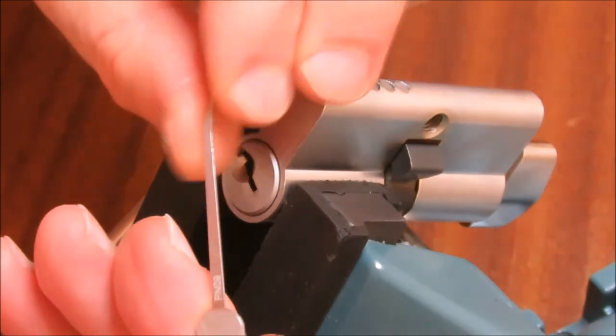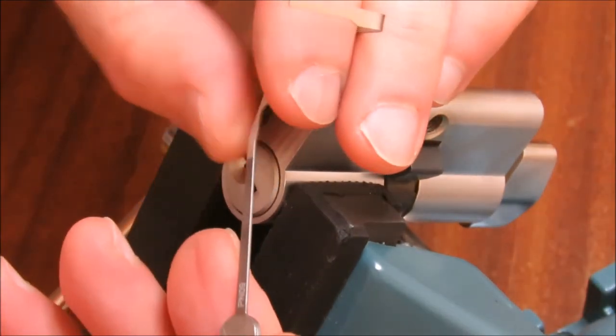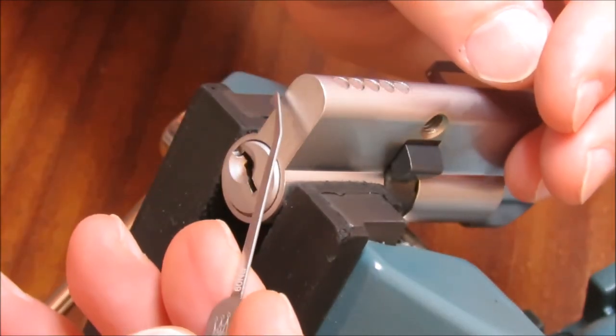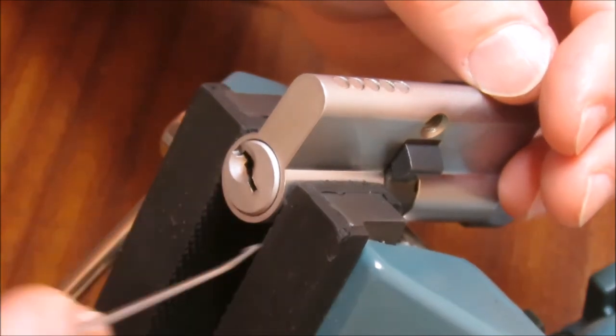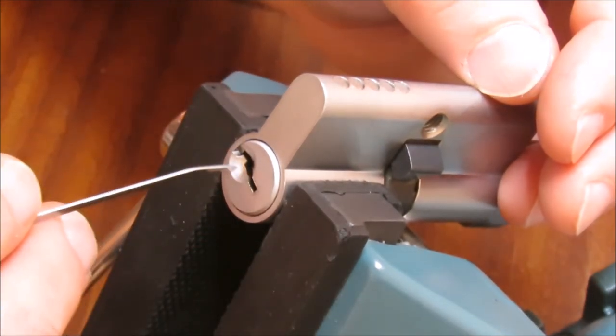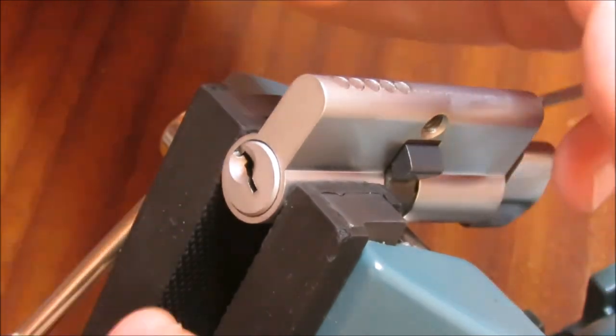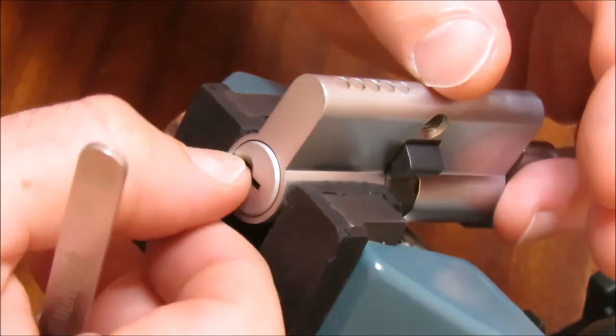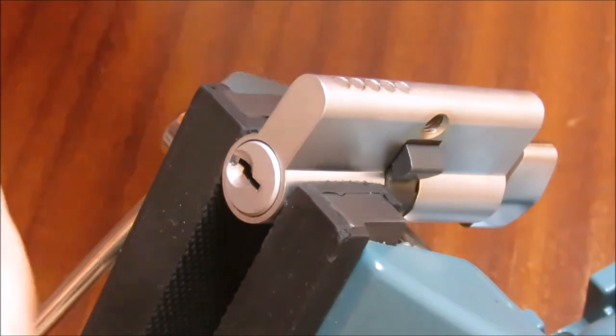Beautiful, beautiful pick. You saw me using light tension and just light picking force on that thing. This is a horrible, crusty lock. This is a disgusting lock. It feels horrible to pick. All crunchy and grungy. But this thing just chewed through it.